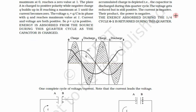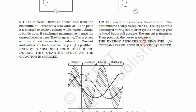Let us understand this from the capacitor's perspective. Starting at zero, with points one, two, three, and four: first the capacitor charges, then it discharges — charge goes back to zero. Then on the other side the capacitor charges again, and then discharges again. So the cycle is: charge, discharge, charge, discharge.